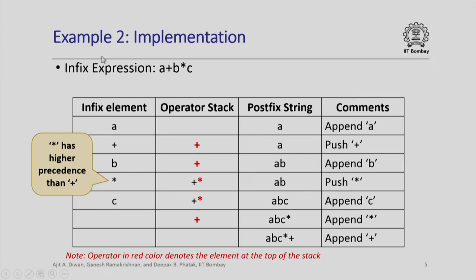Let us look at another example: a plus b star c, which has two operators and three operands. We look at every character one by one. We see a and append it to the postfix string. We see plus and push it to the operator stack. We see b and append it to the postfix string. Now we see star — star has higher precedence than plus, so we push star onto the stack. Then we see c and append it to the postfix string. Since there are no more characters, we remove operators from the stack one by one: we append star followed by plus. Star has higher precedence than plus, which is why star came after plus in the stack.